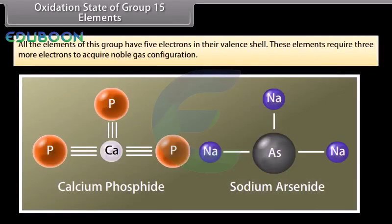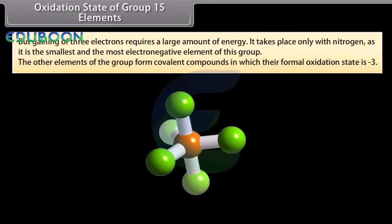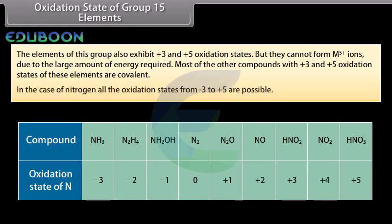All elements of group 15 have 5 electrons in their valence shell and require 3 more electrons to acquire noble gas configuration. Gaining 3 electrons requires a large amount of energy and occurs only with nitrogen, as it is the smallest and most electronegative element of the group. The other elements form covalent compounds with a formal oxidation state of −3. The elements also exhibit +3 and +5 oxidation states, but they cannot form M5+ ions. In the case of nitrogen, all oxidation states from −3 to +5 are possible.